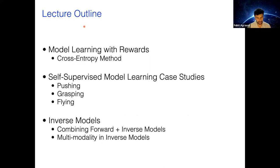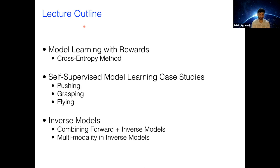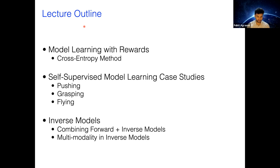The topics we hope to cover: first, how do we combine model learning with rewards? We look into the cross entropy method, which is a gradient-free method for optimization. We look at several case studies for self-supervised model learning. And if we have time, we look at inverse models in this lecture; if not, then in the next lecture.